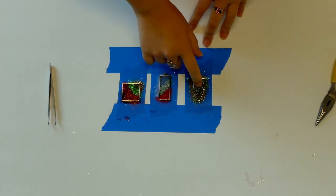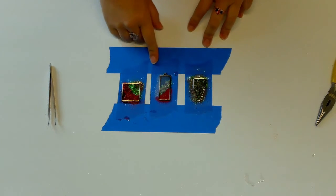After 24 hours, the pendants should be hard to the touch and ready to be pulled off the masking tape.